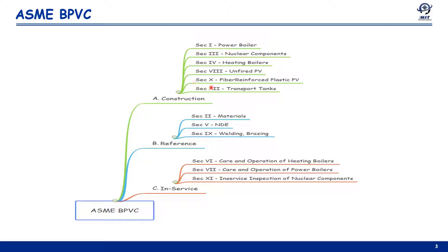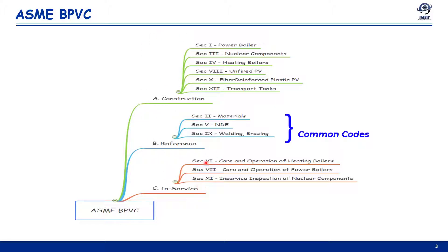Section 12 covers transport tanks. In category B for reference codes, we have Section 2 for materials, Section 5 for non-destructive examination, and Section 9 for welding, brazing, and other joining methods. These are reference codes that can be utilized by all other BPVC codes, so they are common codes for all.